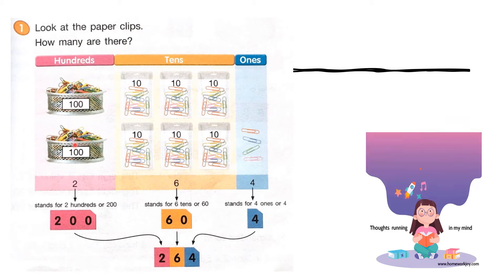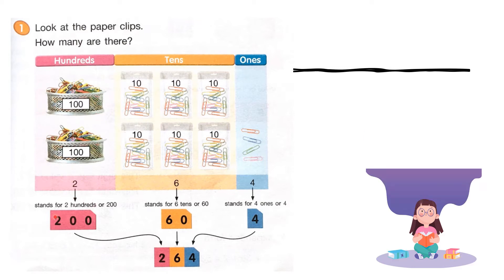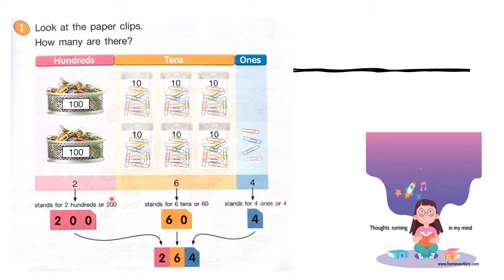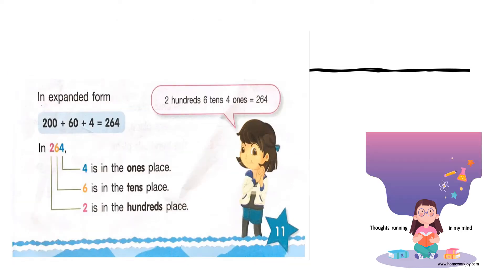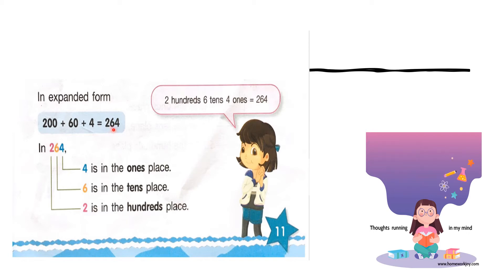And in 100s, we will count how many 100s: 1, 2. There are 2 hundreds. We will write 2 hundreds. So the total number of paper clips is 264 — 2, 6, 4. In expanded form, 200 plus 60 plus 4 is equal to 264: 2 hundreds, 6 tens, and 4 ones.